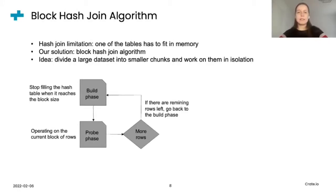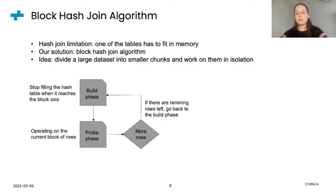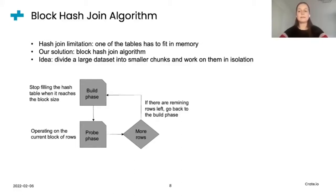So let's see how we further optimize the hash join to get even better performance improvements. As I already mentioned, the limitation of the hash join algorithm is that it requires one of the tables to fit into memory. For CrateDB, this limitation is not acceptable, as there are often cases where this requirement just can't be satisfied. We address the problem with an algorithm called block hash join algorithm. The main idea behind this algorithm is to divide a large dataset into smaller chunks or blocks and to work on them in isolation. The algorithm starts the build phase but stops filling the hash table when it reaches the size of the block. Then it moves to the probe phase, but now it operates only on the current block of rows. After the probe phase, if there are remaining rows, the build phase is repeated and this is done until all rows from the left table are checked for the join condition.